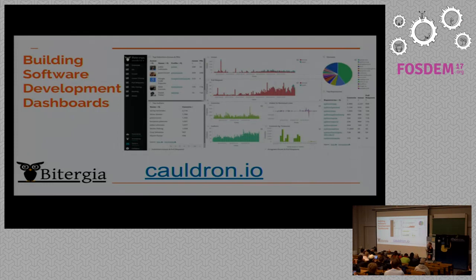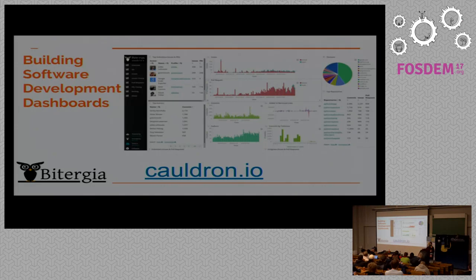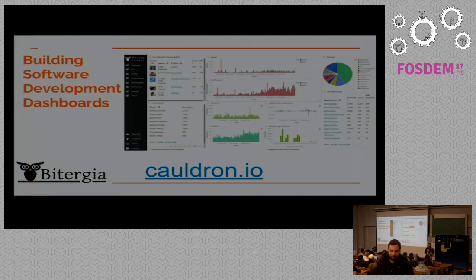If you want to see what Grimoire Lab can do, go to cauldron.io. It's basically a web service where you can enter a GitHub owner or organization, and it does the analytics for that repository. It pulls everything in the Git repository and everything related to issues and pull requests, and in some time it produces a nice dashboard for you. You can also browse dashboards already produced — all done with free software. By the way, the Python organization in GitHub is already analyzed there, so you can look at the dashboard and see how Python has been developed.